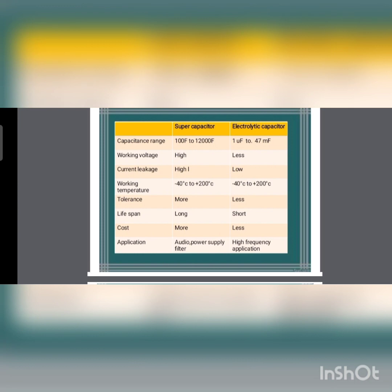Comparing supercapacitor and electrolytic capacitor: the capacitance range for a supercapacitor is 100F to 12000F, while for an electrolytic capacitor it is 1µF to 47mF. Working voltage, current leakage, tolerance, lifespan, and cost are all higher in the supercapacitor than the electrolytic capacitor. For applications, supercapacitors are used in audio and power supply filters, while electrolytic capacitors are used in high-frequency applications.